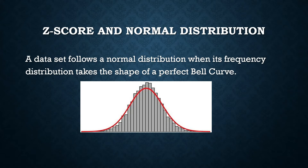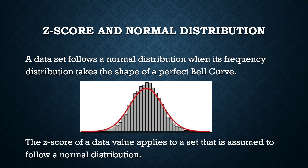The z-score is a measure of relative position — the position of a data value in relation to something else. Whenever you use the z-score to measure the position of a data value, you are assuming that your data follows a normal distribution.